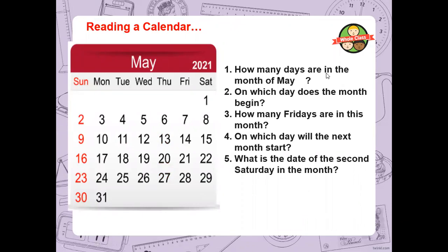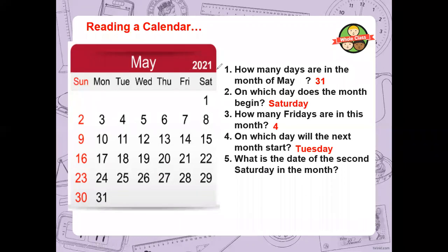So, how do you read a calendar? How many days are in the month of May? You can see that the last day of the month gives us 31 days. On which day does the month begin? The day is Saturday. How many Fridays are in this month? Count them: 1, 2, 3, 4 — there are 4 Fridays. On which day will the next month start? The month ended on Monday, so it will be 1st of June on Tuesday. What is the date of the second Saturday? The first Saturday is the 1st, and the second Saturday is the 8th of May.